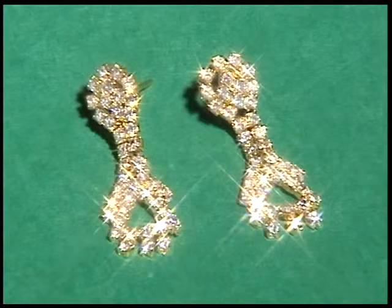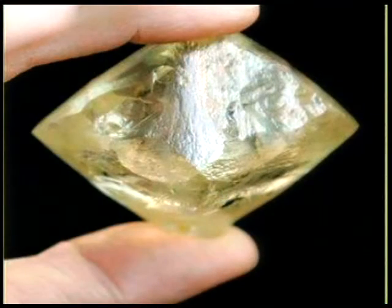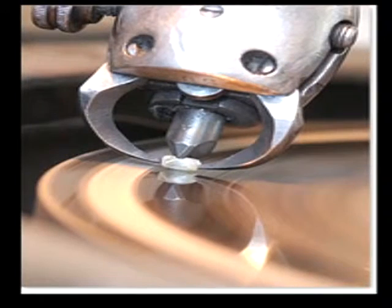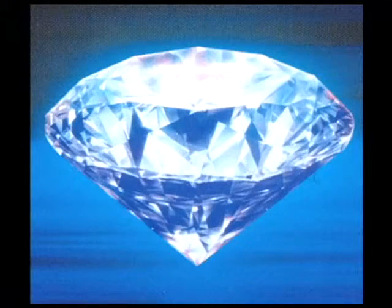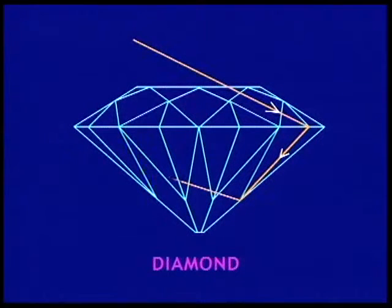The sparkle of a diamond is also due to total internal reflection of light. An uncut diamond stone looks very dull, but when the diamond stone is cut and given a proper shape, it sparkles and looks very beautiful. The critical angle for the diamond-air interface is very small, so light entering the diamond from any face suffers multiple total internal reflections and hence it glitters.